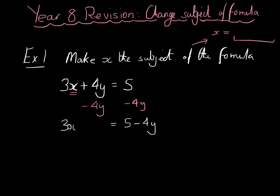And then I'm going to divide both sides by 3 because I just want 1x. Because I've got 3x's of that, so I divide both sides by 3, and I get x is equal to 5 subtract 4y, all divided by 3. And there we go. X now is the subject of the formula. It's on its own, on one side of the equation, with everything else on the other side.